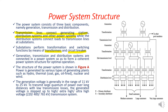The power is generated by various types of generating plants such as hydro, thermal, coal, gas, oil, nuclear power plants, and wind, solar thermal — these are the renewable power plants. These are the non-renewable sources of energy. The generation voltage is generally in the range of 11 kV to 25 kV.